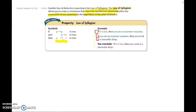We can conclude then that if it is July, then you work at a smoothie shop. Because we have the hypothesis of our first conditional, and then the conclusion of the second becomes the hypothesis of the next. Our conclusion is: you work at a smoothie shop. So once it's July, you're going to be on summer vacation, and once you're on summer vacation, you're going to be working at a smoothie shop.